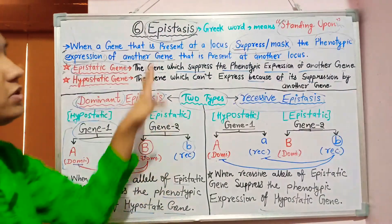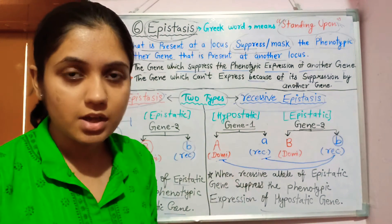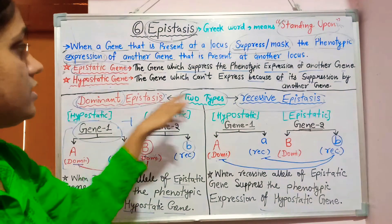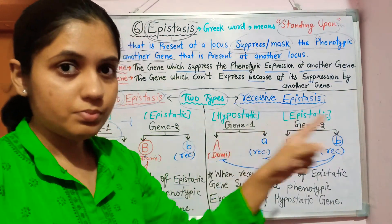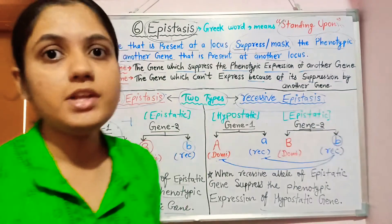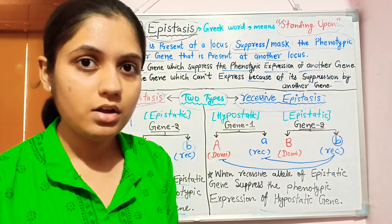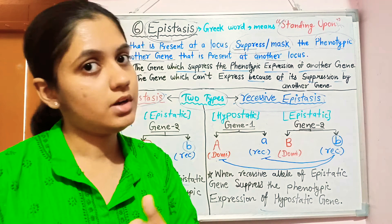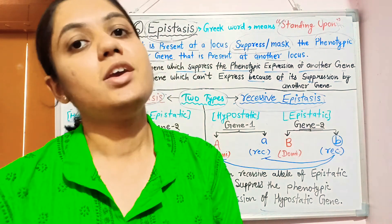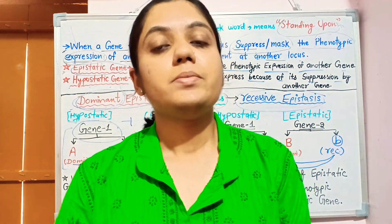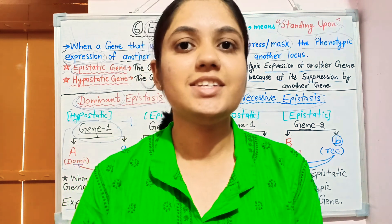In later videos we will discuss dominant and recessive epistasis with examples, the difference between epistasis and inhibitory gene interaction, and the difference between epistasis and the law of dominance. Stay tuned for the next videos. If you like the video, press the like button and subscribe to Asma's Botany. Press the bell icon for the latest updates. Thank you.